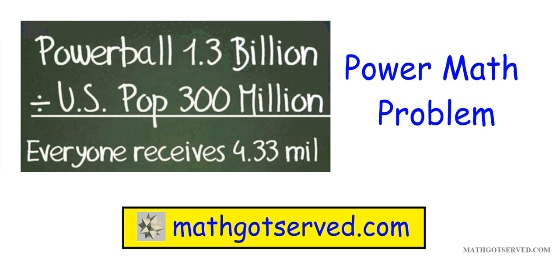Good day YouTube, welcome to mathgotserved.com. In this clip we're going to be going over a popular Powerball meme that has been circulating different social media websites. The problem goes this way: Powerball of 1.3 billion divided by the US population of 300 million results in everyone receiving 4.33 million dollars.